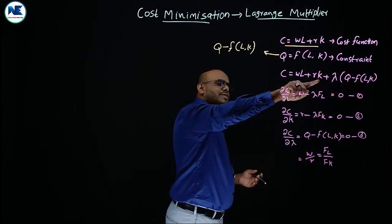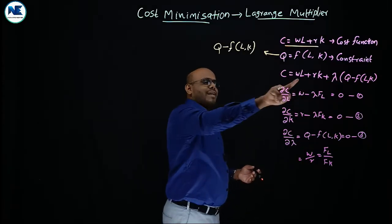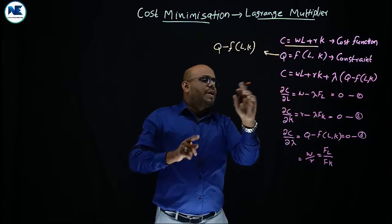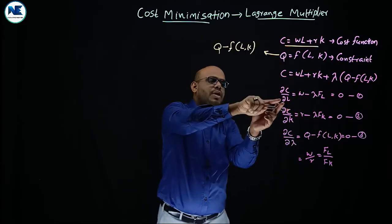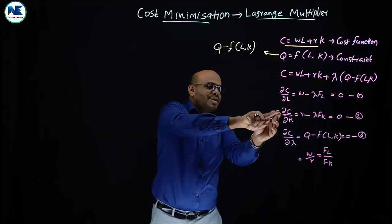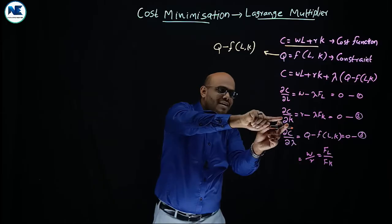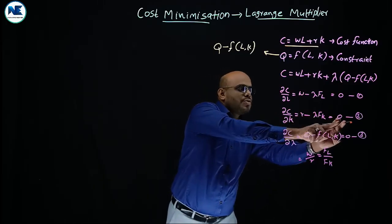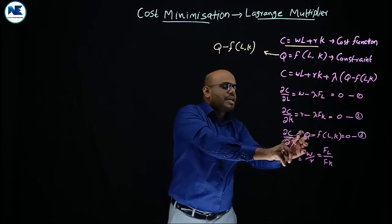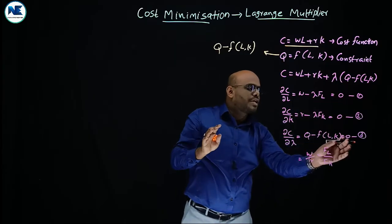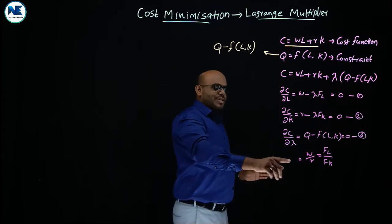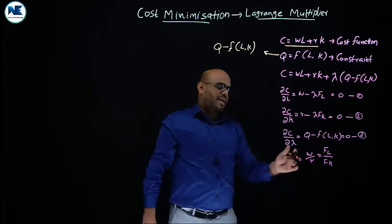The next step is to take partial differentiation with respect to the unknowns: labor L, capital K, and lambda. These are the first order conditions. Partially differentiating C with respect to L gives: W − λFL = 0. Differentiating with respect to K gives: R − λFK = 0. Differentiating with respect to lambda gives: Q − f(L, K) = 0. Solving these three equations simultaneously gives: W/R = FL/FK, where FL is the marginal productivity of labor and FK is the marginal productivity of capital.